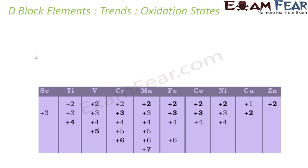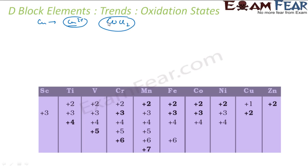For example, copper typically loses two electrons to form Cu2+. This can form a compound — for example, Cu2Cl2 — it can form a compound with chlorine. Or sometimes you will see that copper forms a compound with oxygen. Here also, the oxidation state of copper is plus 2.